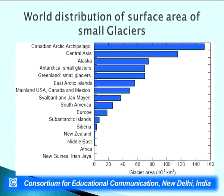The world distribution of surface area of small glaciers shows that the Canadian Arctic has the maximum number, followed by Central Asia and Alaska. Central Asia includes the Himalayan area, which is the largest glacial ice outside the polar regions. It is very important not just because it is the second largest glacial ice area, but also because it caters to nearly 50 percent of the world's population — India, Bangladesh, Nepal, Pakistan, and China together — who depend on water supply from the Himalayan regions.